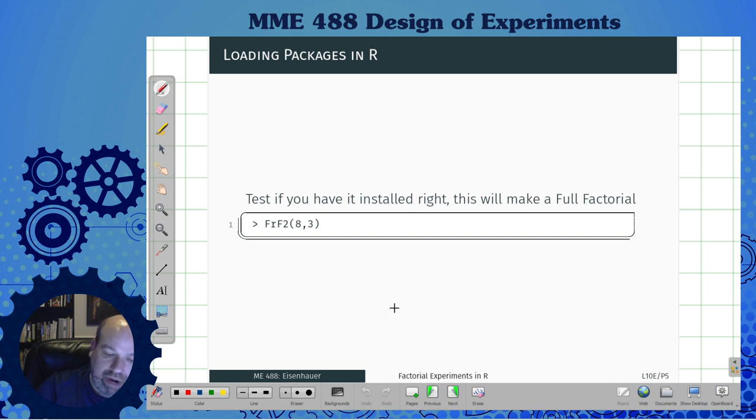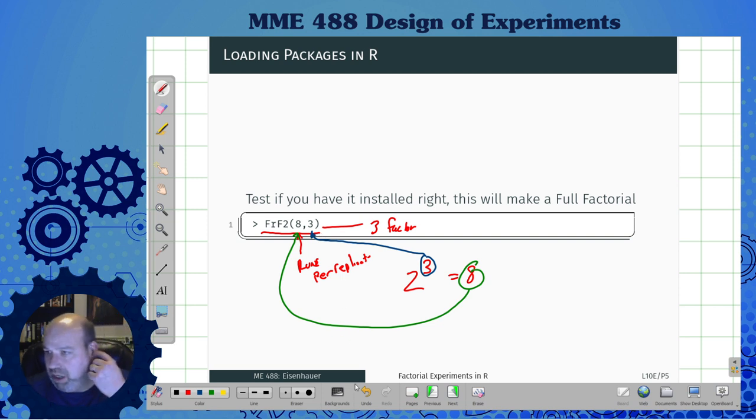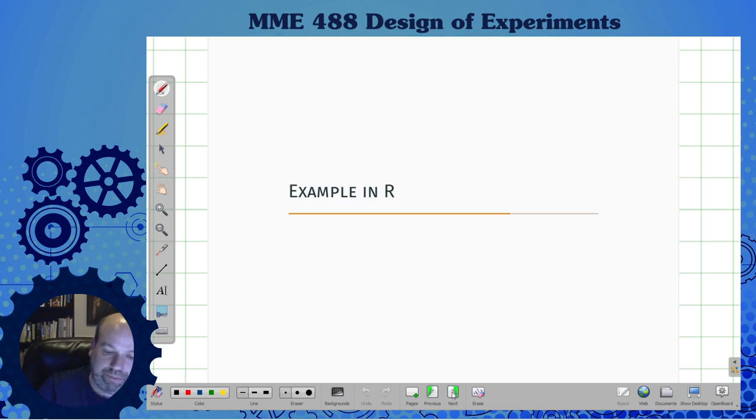Then test to see if you did it right. If you type frf2, the output will show you a model. In this case, this says eight runs per replicate, and I want a three-factored experiment. So it's basically making a 2 to the 3. There's a lot of different ways to specify an experiment in frf2 package, but this is one of them. That's just a test to see if you've actually installed it right.